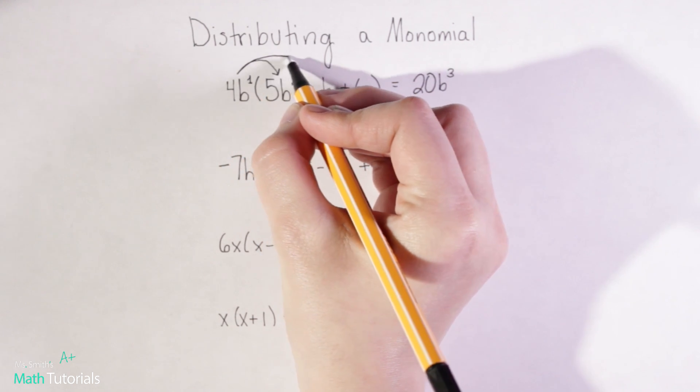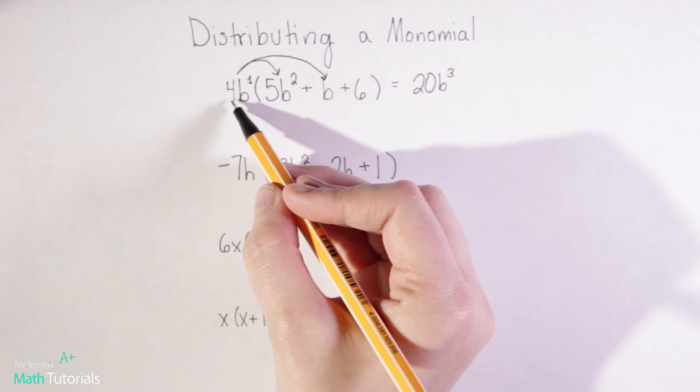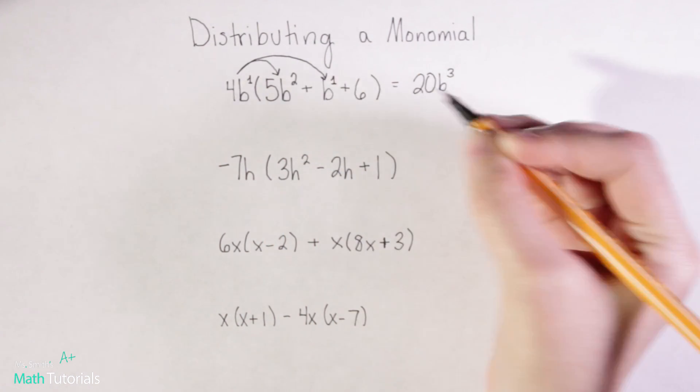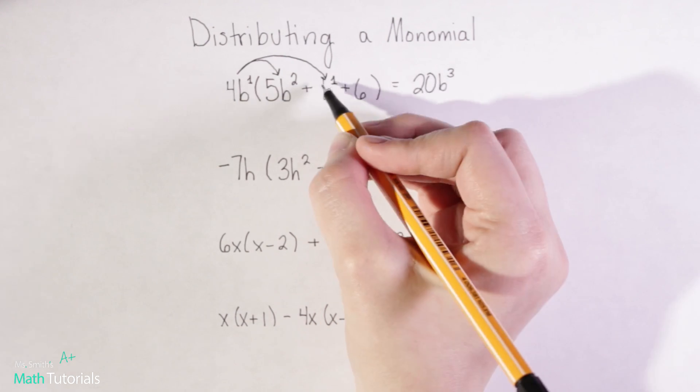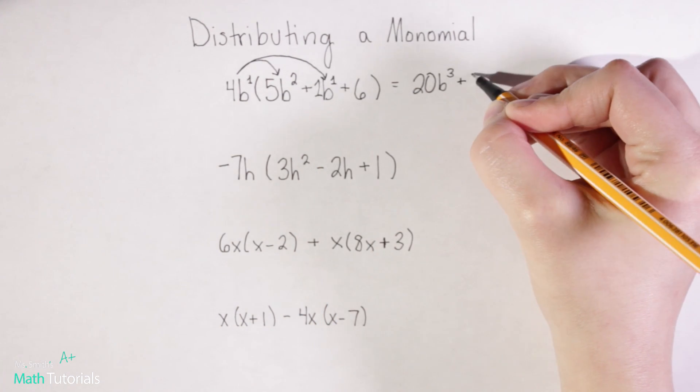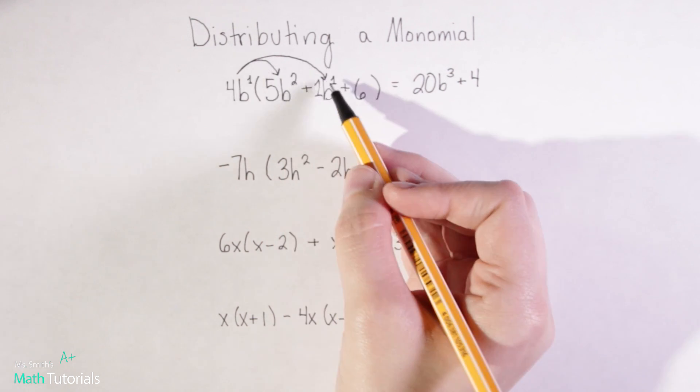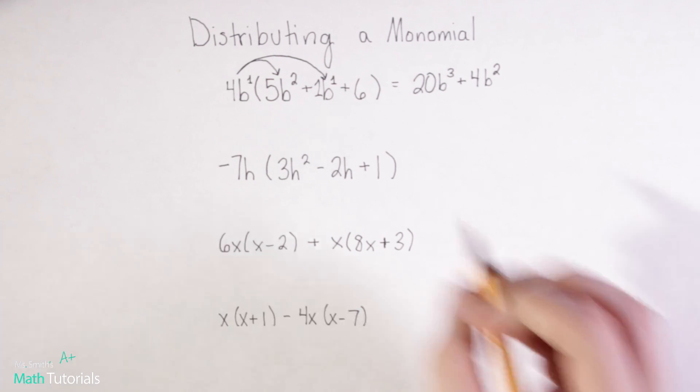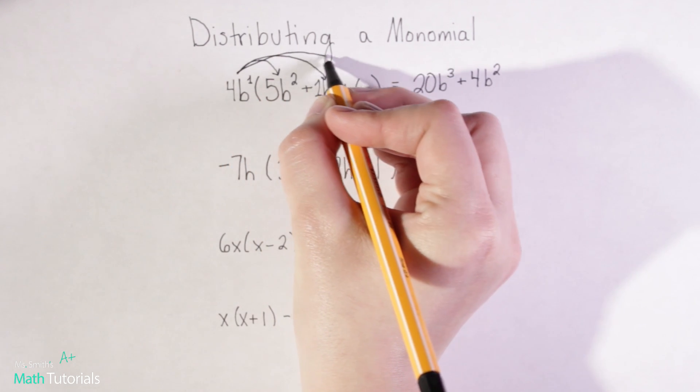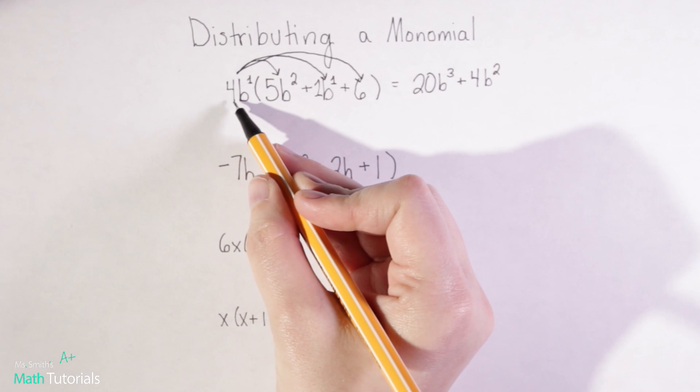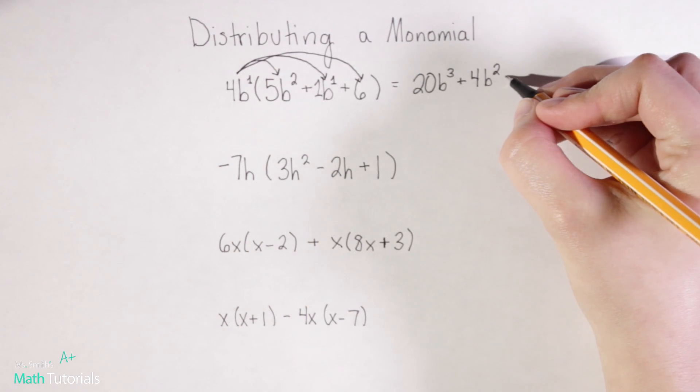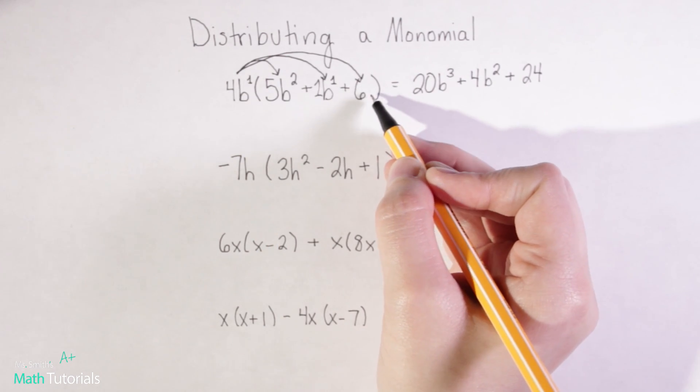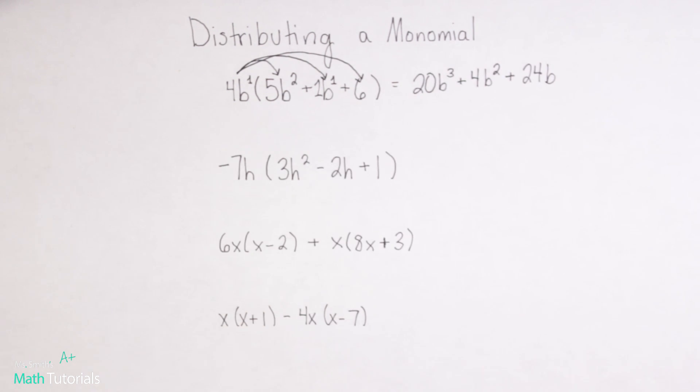We'll keep distributing to our second term now. 4b to the first times b to the first, so 4 times an understood one in front of this b would be positive 4, and then b to the first times b to the first would be b to the second because I add my exponents when multiplying. Now I'm going to distribute this 4b to the last part of my problem. 4 times 6 would be positive 24, and then b to the first, there's no b to combine it with so my b just stays b to the first.